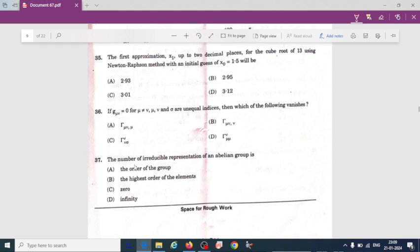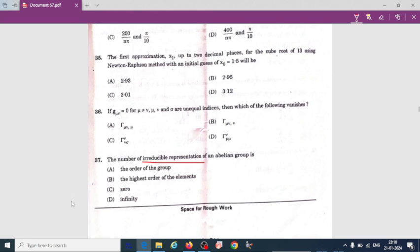The number of irreducible representations of an abelian group - if we take the order of the group, option A, it is equal to the number of conjugacy classes or we can say the order of the group. Option A.